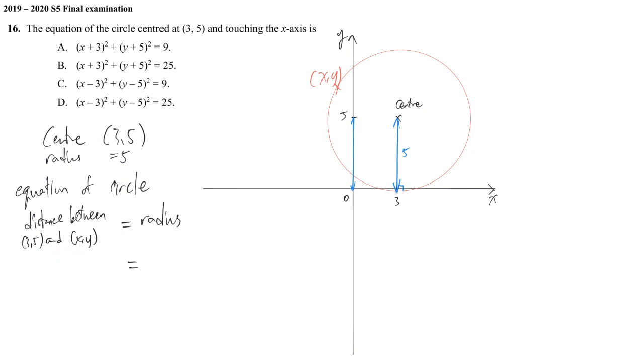The distance between them is X minus 3 square plus Y minus 5 square by Pythagoras theorem. The radius is 5. So in reverse, X minus 3 square plus Y minus 5 square is equal to 25. That's why the answer is D.